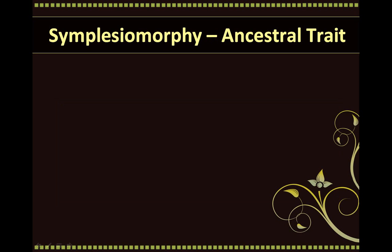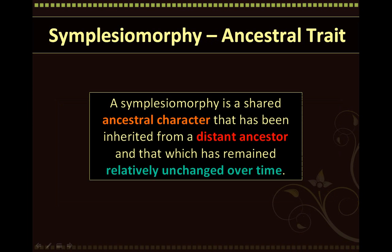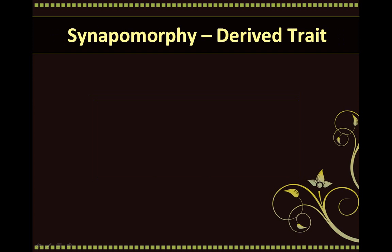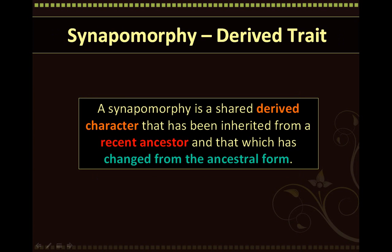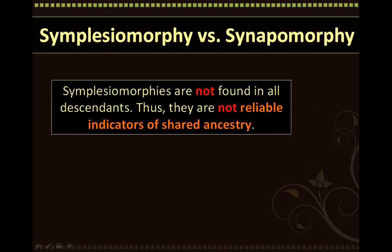Let's first discuss simplesiomorphies, which are also known as ancestral traits. A simplesiomorphie is a shared ancestral character that has been inherited from a distant ancestor and has remained relatively unchanged over time. A synapomorphie, on the other hand, is a shared derived character which has been inherited from a recent ancestor and has changed from the ancestral form. Simplesiomorphies are often not found in all descendants; thus, simplesiomorphies are not reliable indicators of shared ancestry and are not useful in constructing phylogenies.